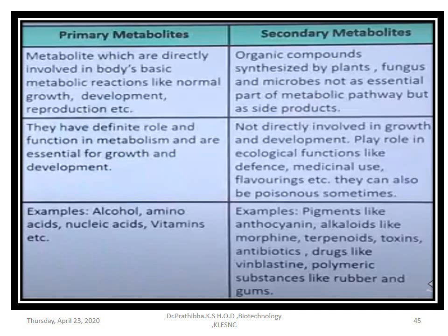Differences between primary and secondary metabolites: primary metabolites are directly involved in basic metabolic reactions like normal growth, development, and reproduction. Secondary metabolites are organic compounds synthesized by plants, fungi, and microbes and are not essential parts of the metabolic pathway but are side products. Primary metabolites have a definite role and are essential for growth and development. Secondary metabolites are not directly involved in growth and development, but play important roles in ecological functions like defense, medicinal use, and flavorings. They can also be poisonous sometimes, so one should be careful with the secondary metabolites production process.